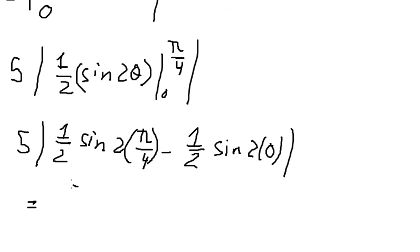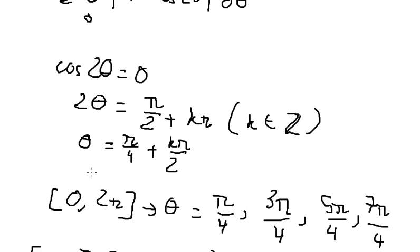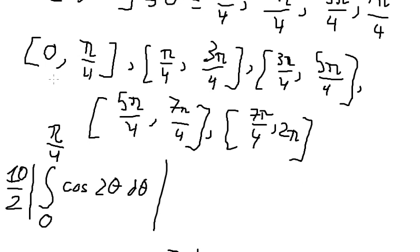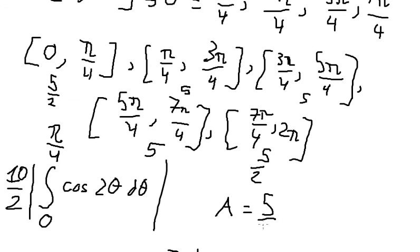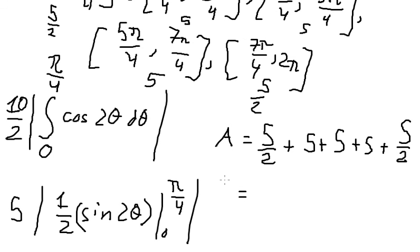So we have 5 multiplied by 1 over 2, which gives 5 over 2 for each interval. Now we sum all 5 numbers together — 5 intervals each contributing 5 over 2 — and we get a total of 20.